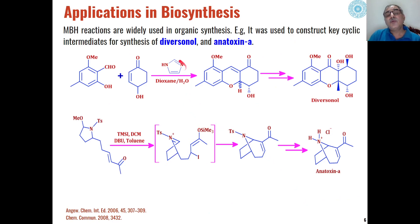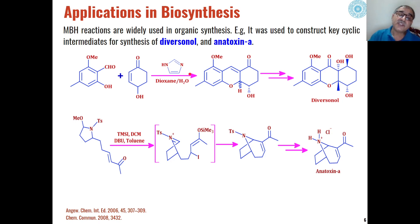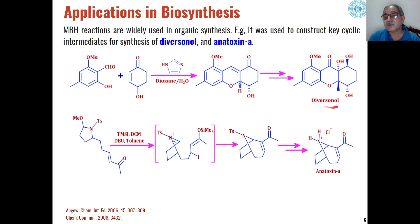Two more examples of biosynthesis of natural products using Baylis-Hillman reaction: alpha-hydroxy aryl aldehydes react with alpha-beta unsaturated ketones, where one part acts as alkene and the other as carbonyl compound. In the presence of imidazole as the base, this undergoes Morita Baylis-Hillman reaction, and through condensation and further steps, this can be converted into diversonode, a biologically active natural product.